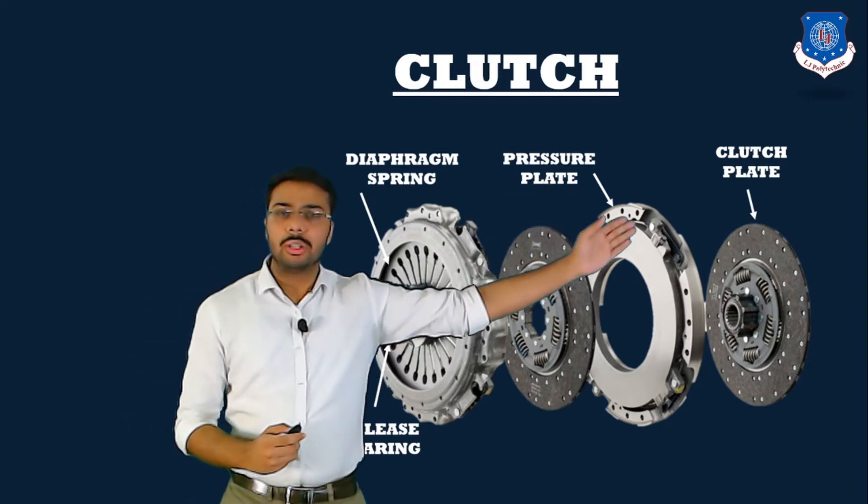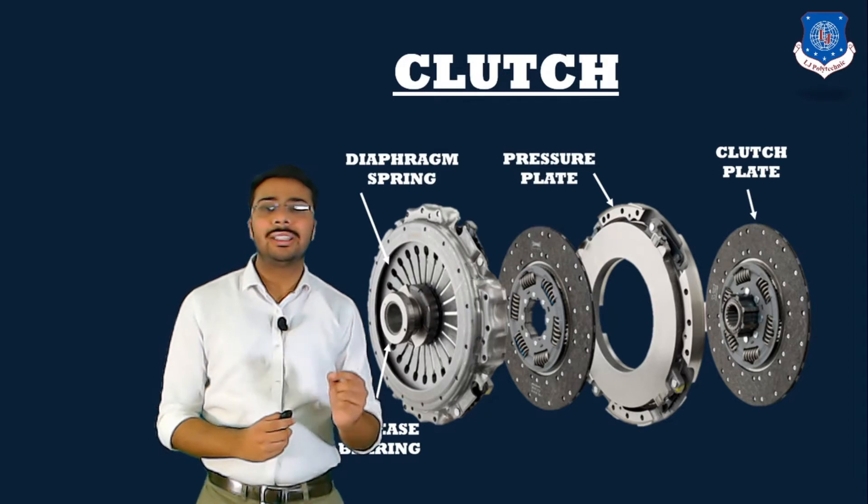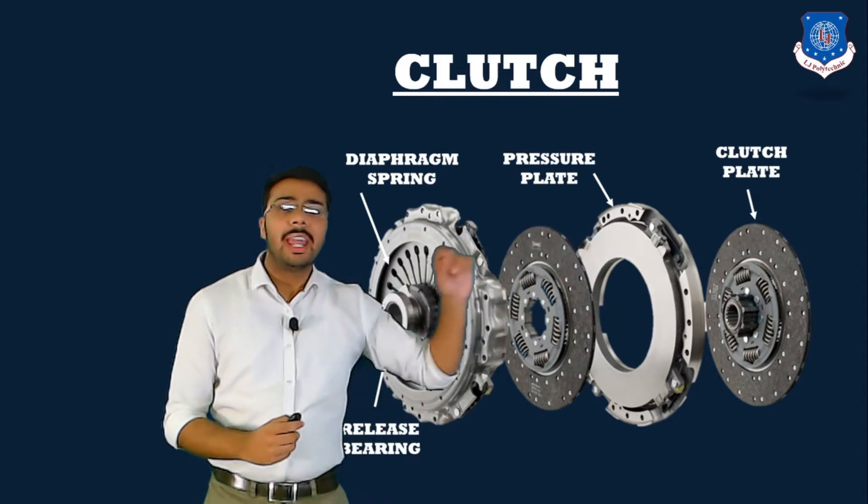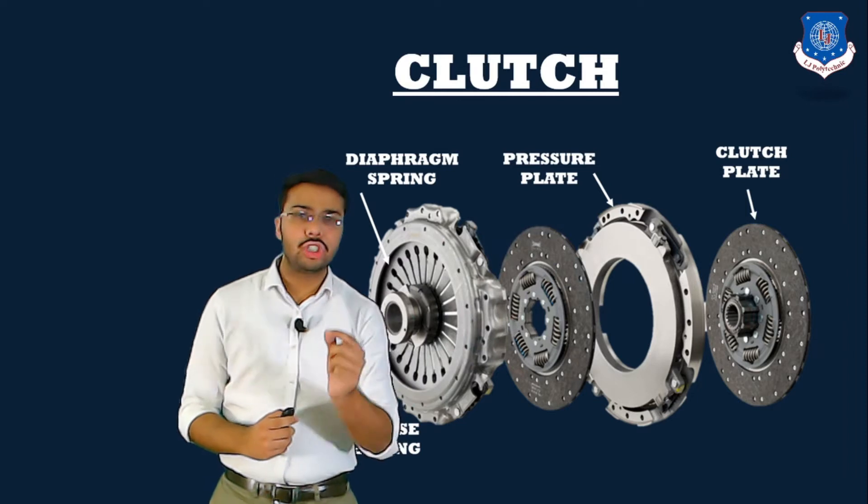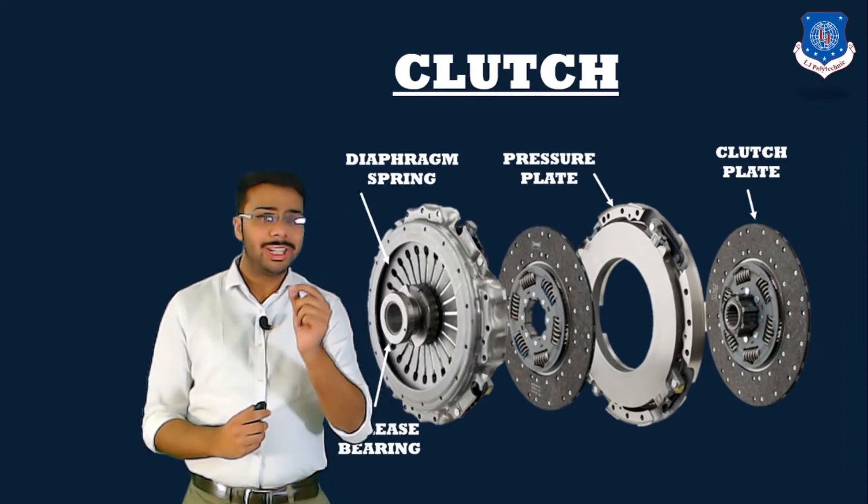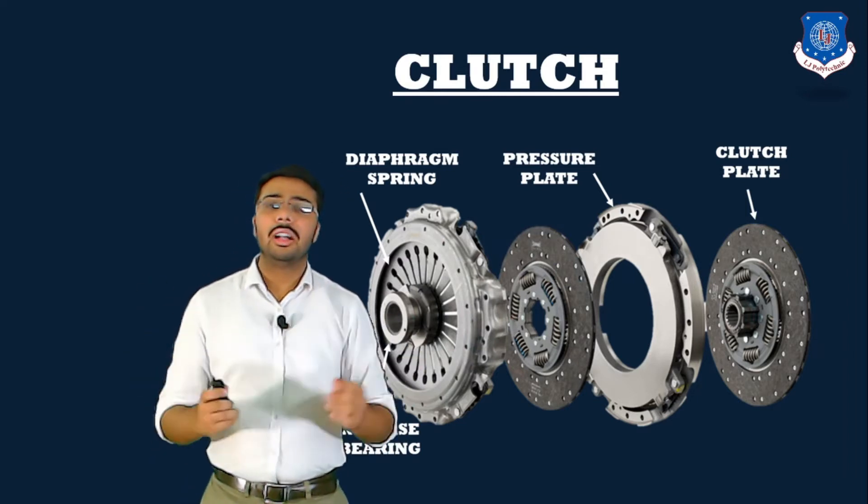Then comes the pressure plate. Pressure plate provides the axial load to the clutch plate. And clutch plate, also known as the friction plate, is provided for the frictional contact between driver and driven.